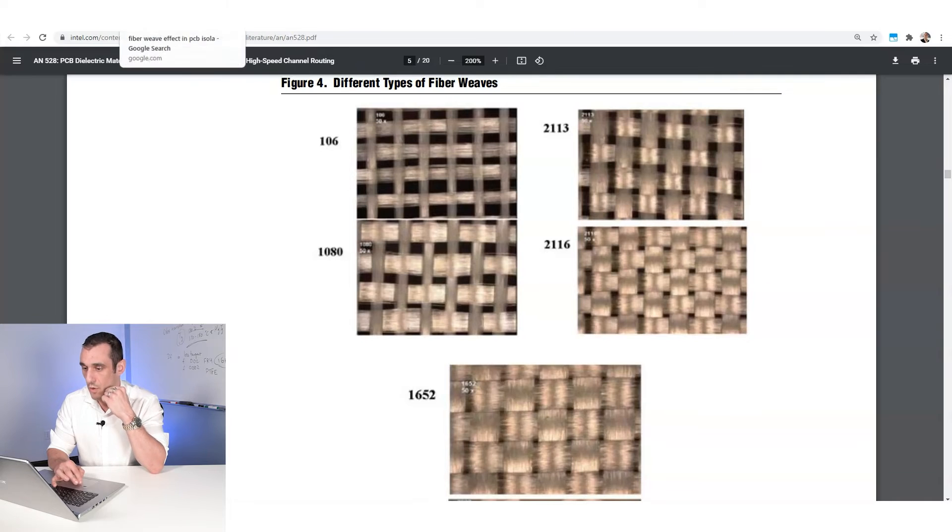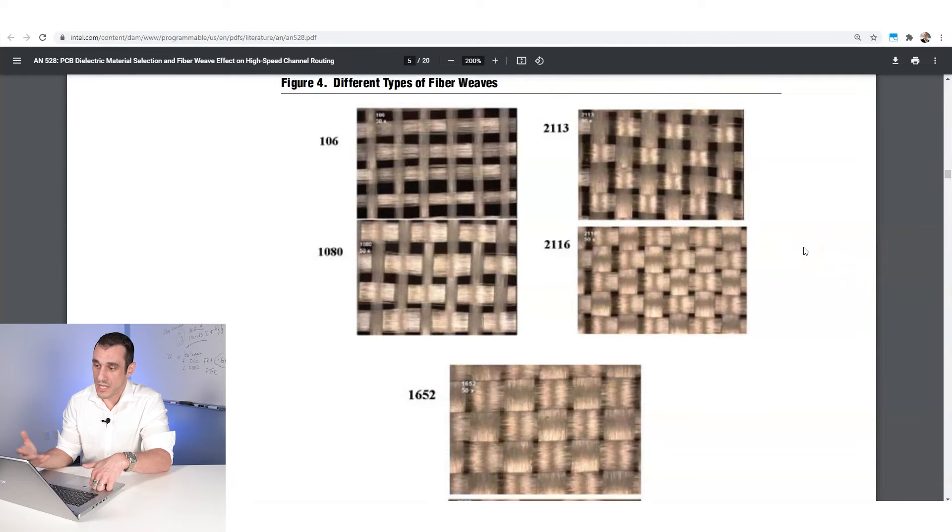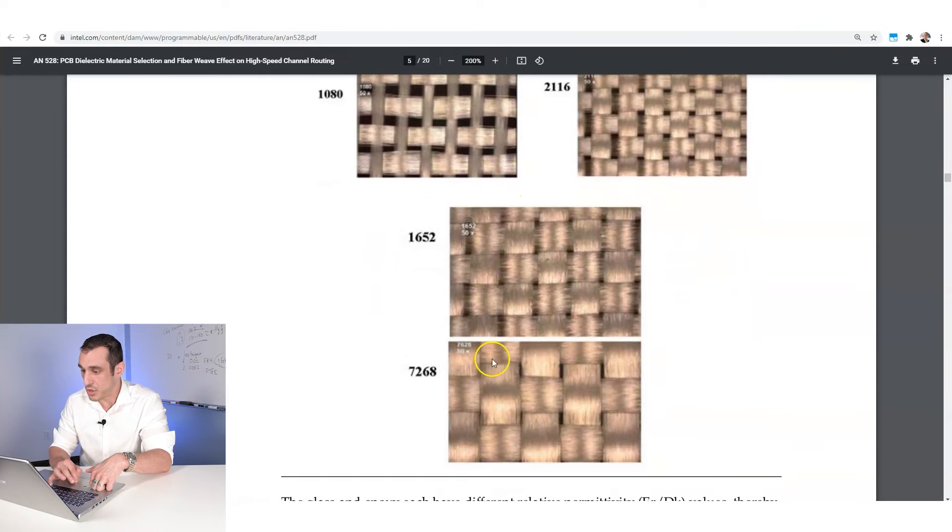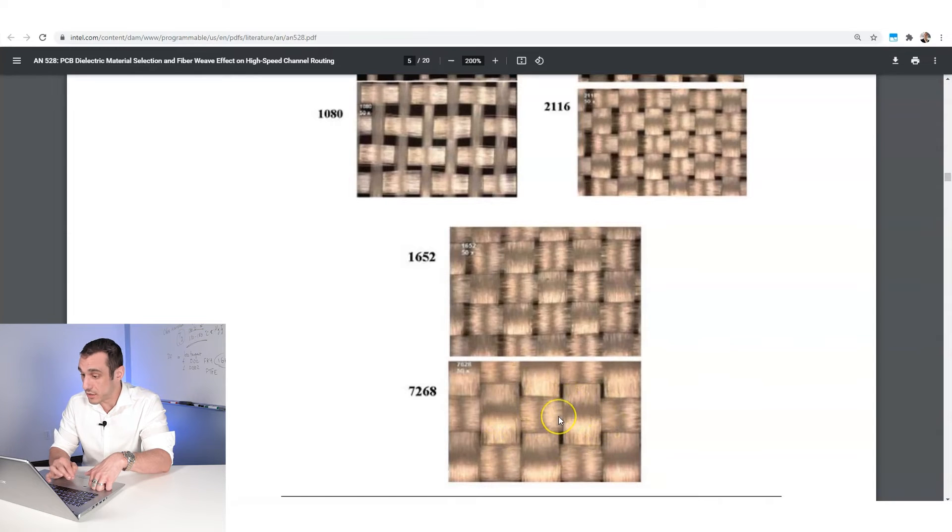So different laminate materials will have these different designations and these numbers onto the left of these images tell you what the different weaves are being used in these different materials. So here, 106, pretty loose weave. You see there's a lot of dark space in between each of these sections of fiberglass. And then here, if I just scroll down, 7628 and 1652, you can see there's very tight weaves.